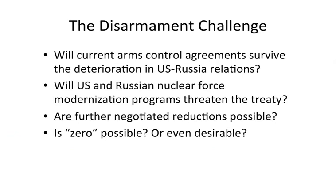The challenge going forward is whether current arms control agreements will survive the deterioration in US-Russia relations. Things have gotten much worse since 2010, so it's difficult to believe the US and Russia would be able to achieve a new agreement on nuclear force levels. The next question is whether US and Russian nuclear force modernization programs — which are underway in both countries — will threaten the New START Treaty. Are further negotiated reductions possible? Perhaps not. And for disarmament advocates, is zero possible, or is it even desirable? Maybe it's better if the United States and Russia both retain some nuclear weapons as a deterrent, and there's a serious strategic argument about that.